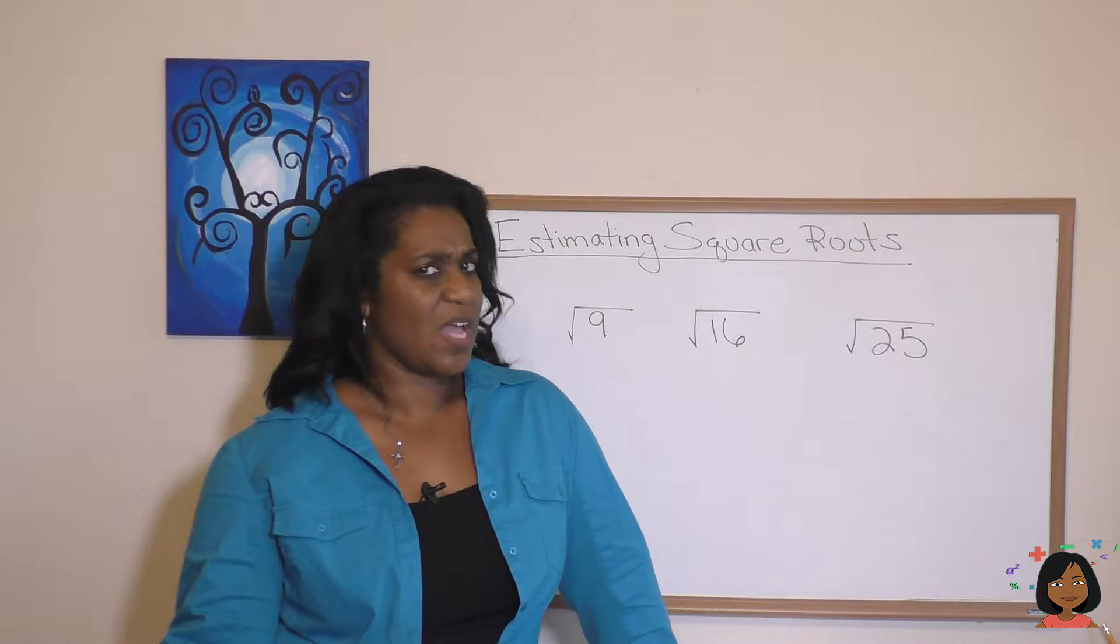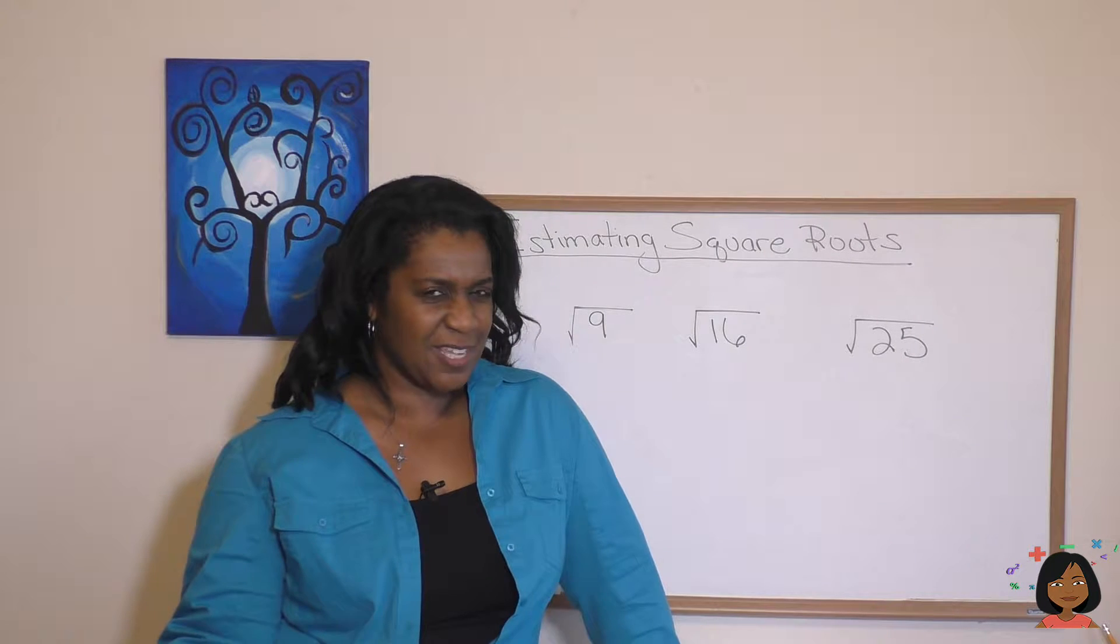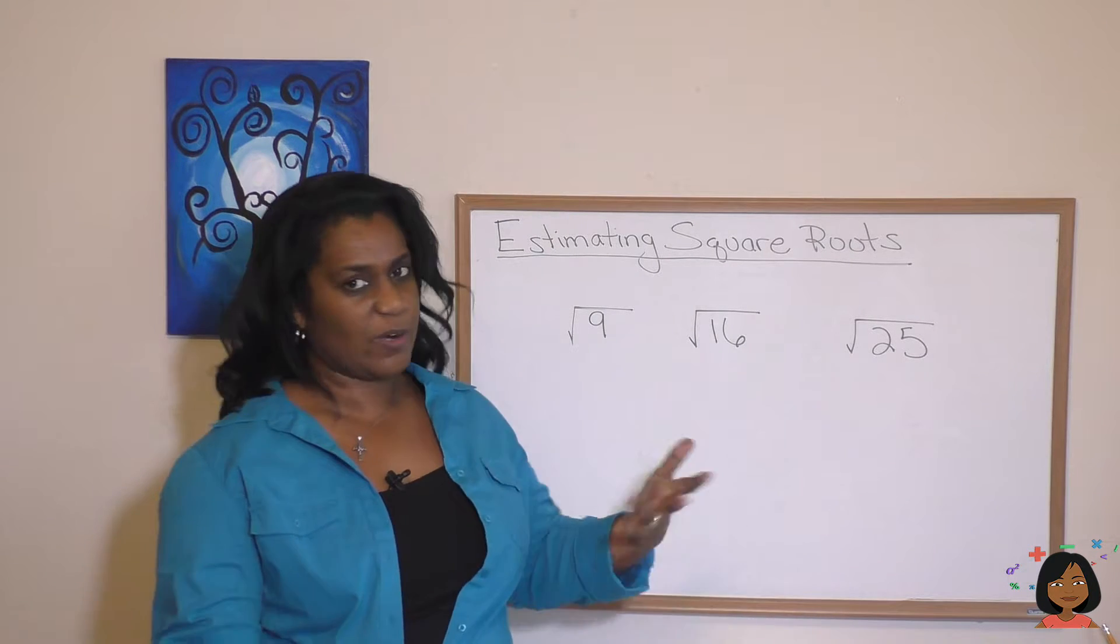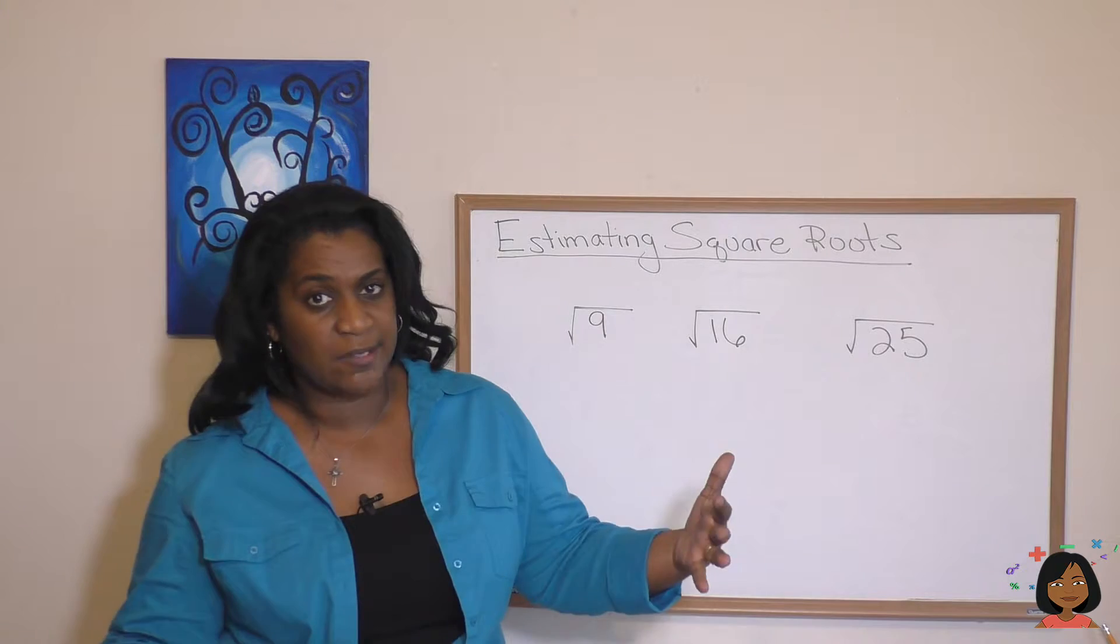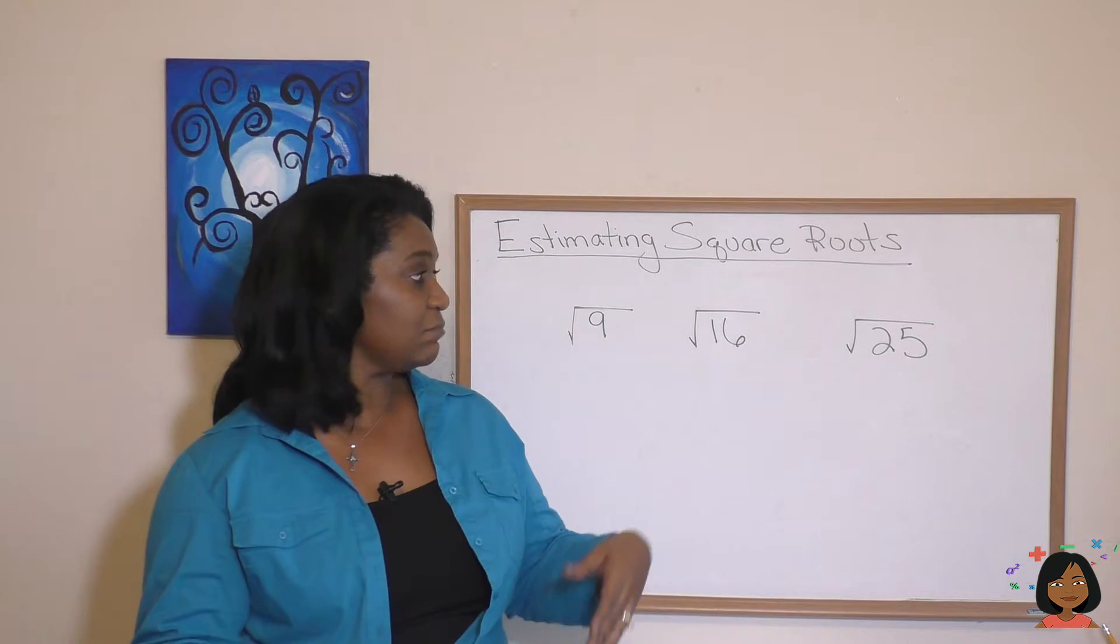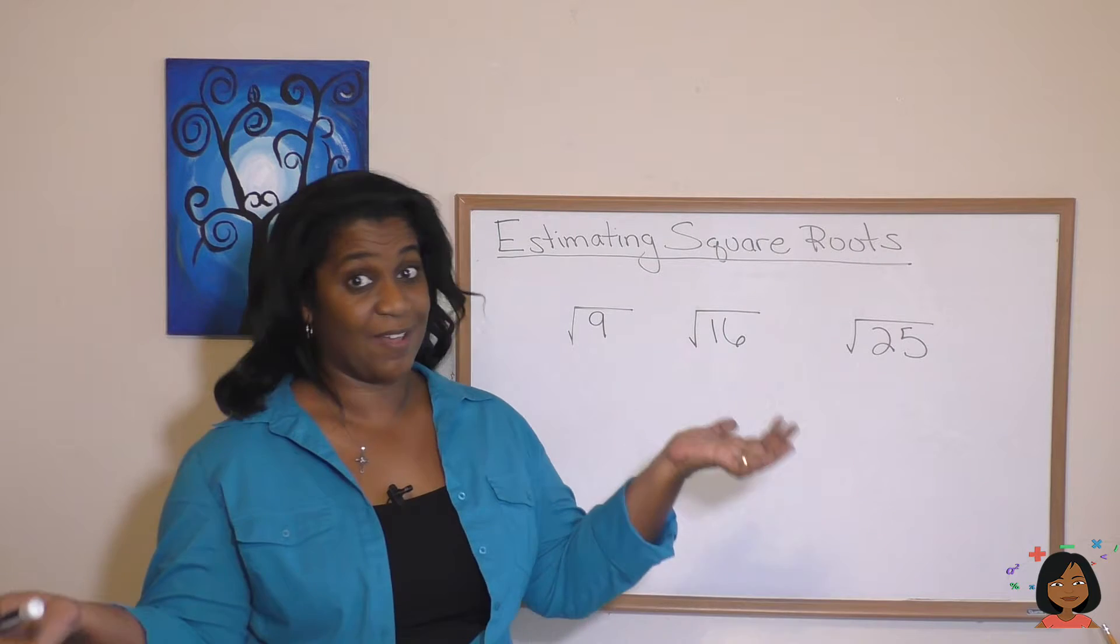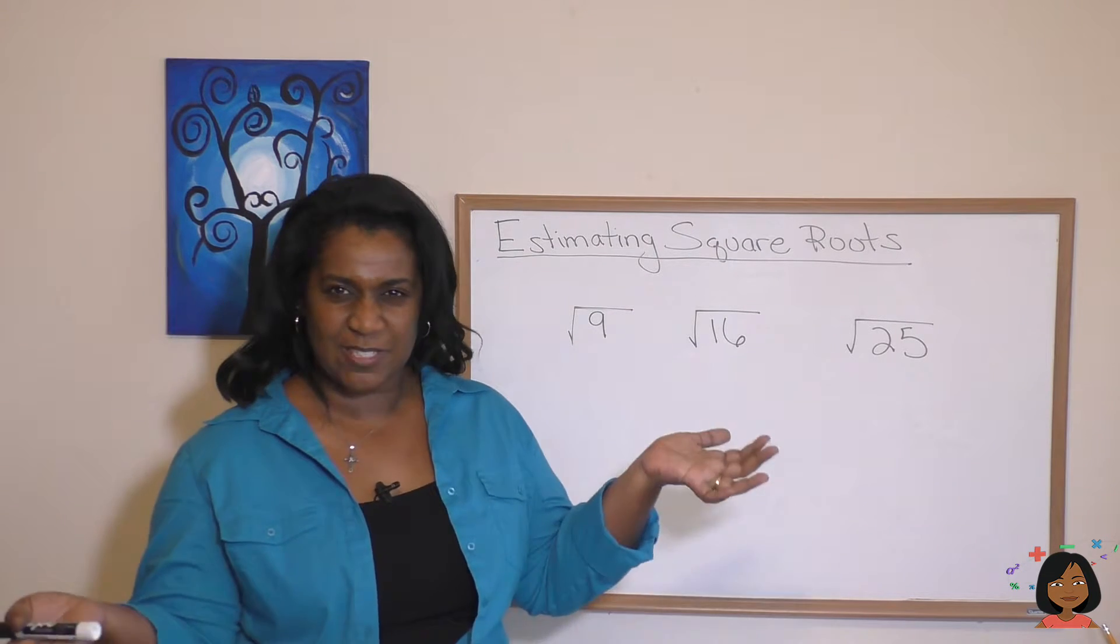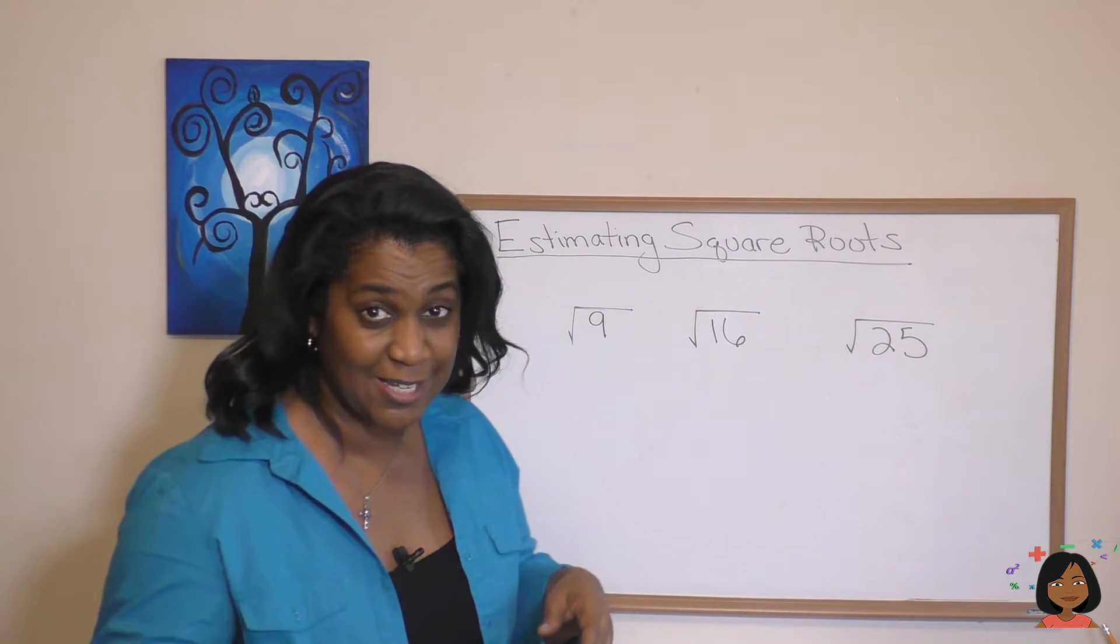We might ask why do we need to estimate square roots? They're pretty simple, right? I mean, for example, square root of 9, we know 3 times 3 is 9. Square root of 16, 4 times 4 is 16. Square root of 25, 5 times 5 is 25. So this would be pretty simple, unless you start getting into bigger numbers.